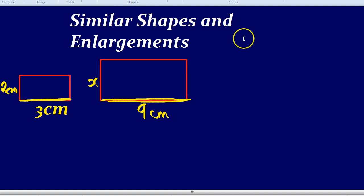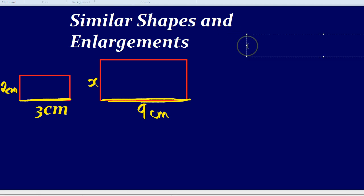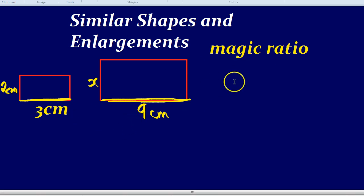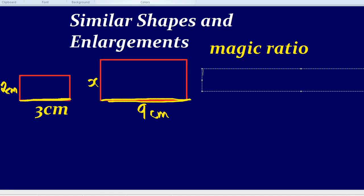So with similar shapes, you're always looking to find the magic ratio. Can you see the magic ratio? It is what you times the smaller one by to get to the bigger shape. 3 times by what gets you 9? Well, 3 times by 3 gets you 9. So here, the magic ratio equals 3, equals times by 3.